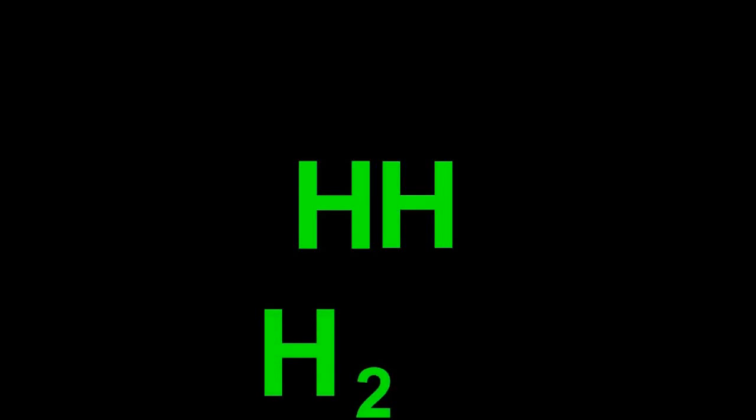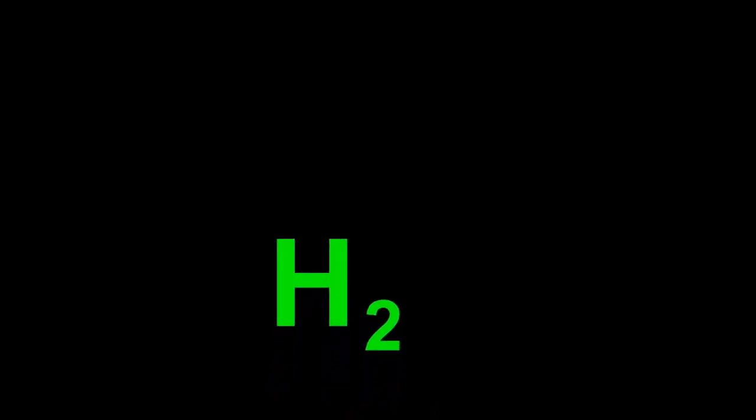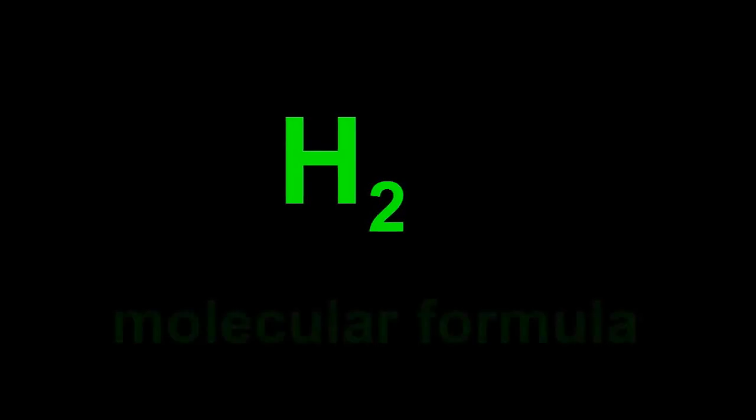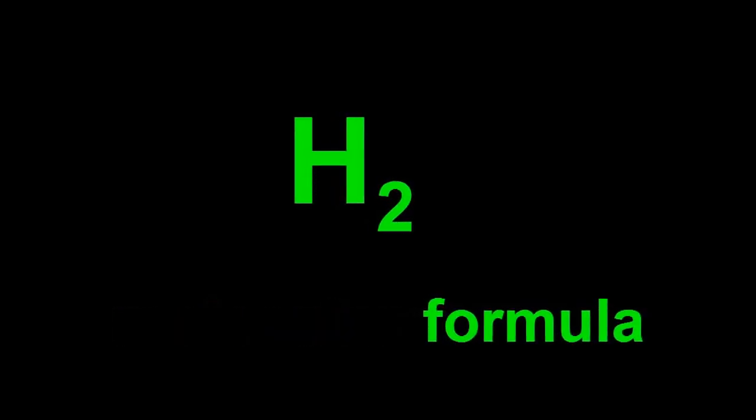Even simpler, they could write it as H2, with the two standing for the number of hydrogen atoms joined by the bond. The two is written as a subscript, that is, a little two, a bit below the hydrogen symbol. This way of writing a hydrogen molecule is called a molecular formula, or just formula.